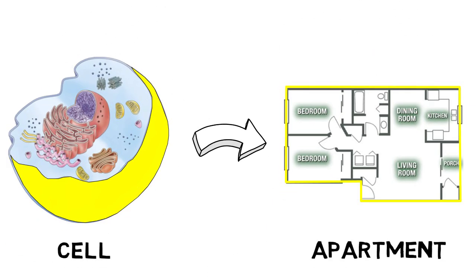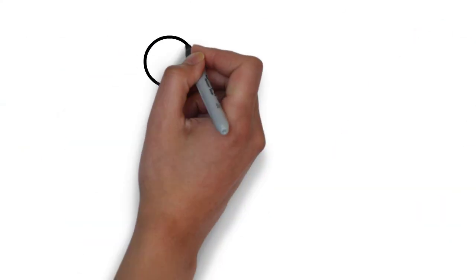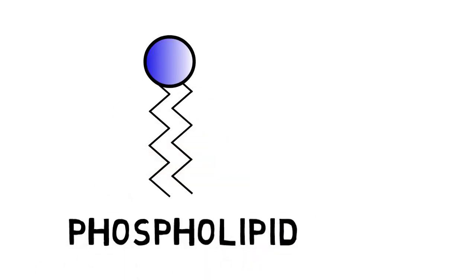Let's now take a closer look at the cell membrane. Just like many bricks are required to form a wall, the cell membrane is also made up of millions of building blocks called phospholipids.